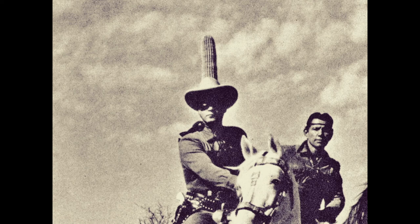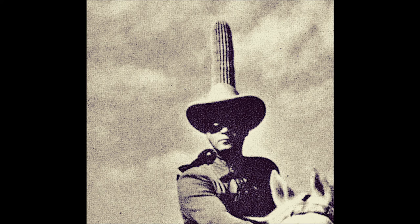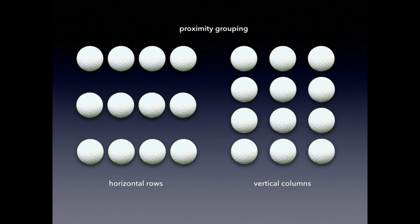At least two factors are to blame. First, there is a degree of resemblance between the two components. The crown of the hat and the cactus are of nearly equal width, and their shadows and highlights also converge. Our tendency to see them as connected is called similarity grouping. The second factor is positioning or nearness.